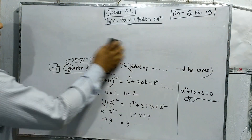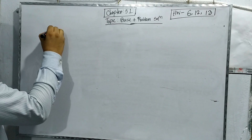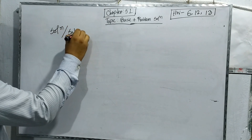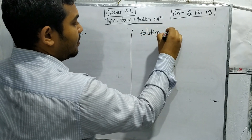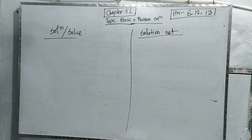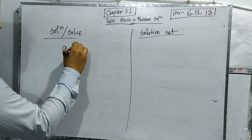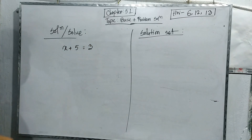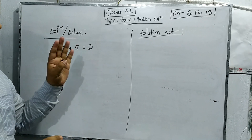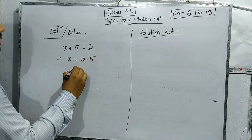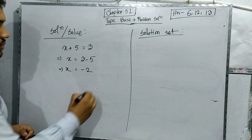Next, we focus on the difference between solve or solution and solution set. For example, suppose there is an equation x plus 5 equals 3. If we find the value of x, that is known as the solve or solution. So x equals 3 minus 5, or minus 2. We just found the value of the unknown, so this is the solve or solution. You must write 'solved' as your answer.